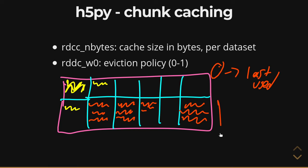On the other hand, if you set w0 to one, it will still follow a last-used policy for eviction, but it conditions that on the last used chunk that was either fully written to or fully read from. This means H5Py will hang on to chunks that are only partially written to or partially read from, and instead evict the least recently used chunk that was fully read or written.